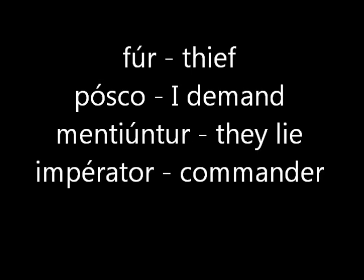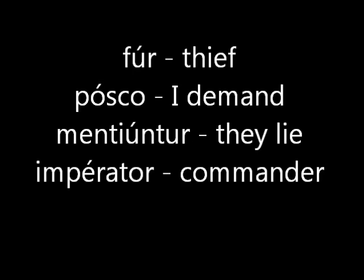Lastly, we have emphasis. If a word has one syllable, it will have emphasis — such as fur, which means thief. This doesn't count for prepositions, but we'll cover those later. If it has two syllables, it will go on the first syllable, such as posco, meaning I demand. If a word has more than two syllables, emphasis goes on the penultimate syllable if it is a heavy syllable, such as mentiunta, meaning they lie. But if not, it goes on the antepenultimate — the third from last — for example, imperator, meaning commander.